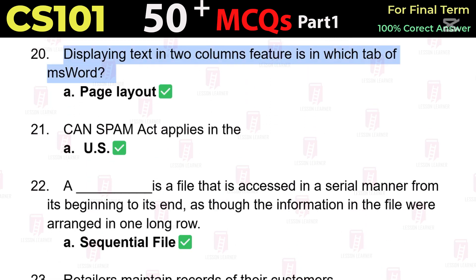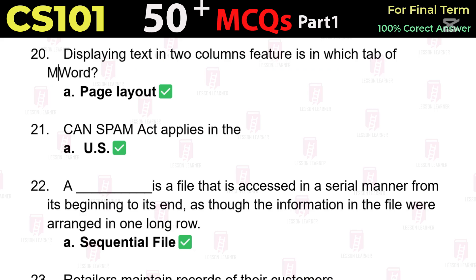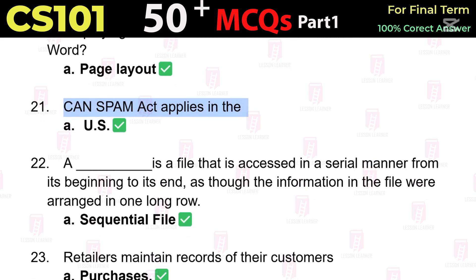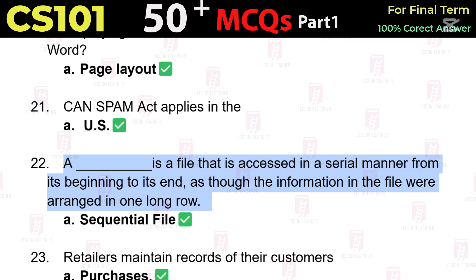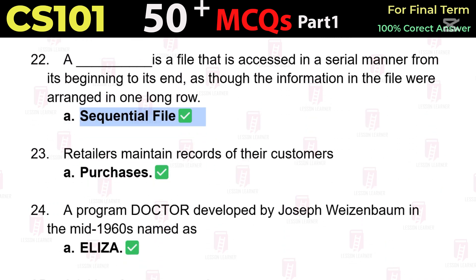The 'Block Author' option in MS Word prevents others from making changes to the selected text. Displaying text in two columns is a feature found in the Page Layout tab of MS Word. The CAN-SPAM Act applies in the US. A sequential file is a file that exists in a serial manner from its beginning to its end, as though the information in the file were arranged in one long row.